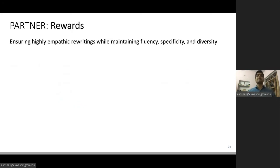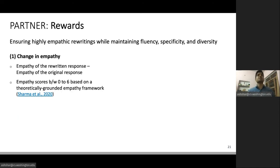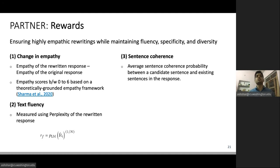Our RL model is trained using a series of rewards which ensure highly empathic rewritings while maintaining fluency, specificity and diversity. Our first reward is change in empathy, computed as empathy of the rewritten response minus empathy of the original response. We obtain empathy scores based on a theoretically grounded empathy framework and the corresponding classifier developed in prior work, which gives us scores on a scale from 0 to 6. We also have fluency and sentence coherency, which are used to ensure grammatically correct English sentences. And finally, we have mutual information, which we use for ensuring specificity and diversity. This measure captures shared information between your seeker post and the generated response.